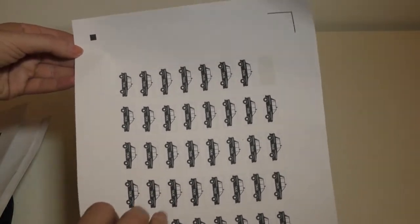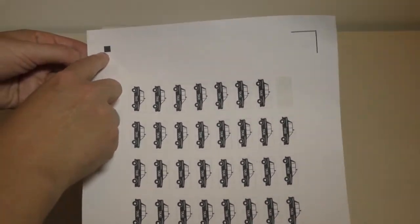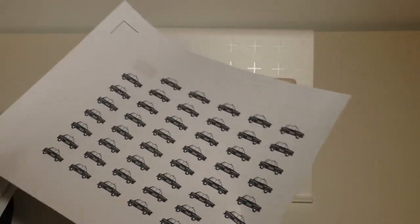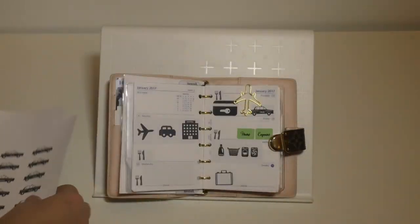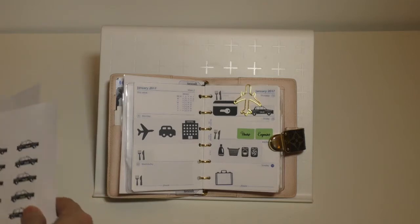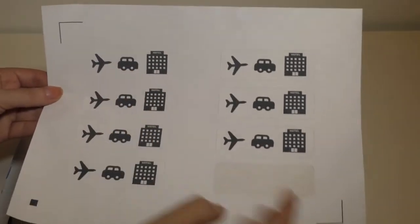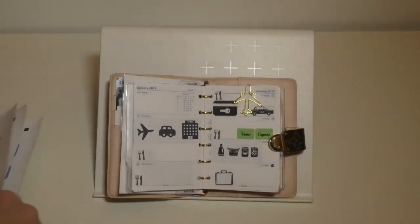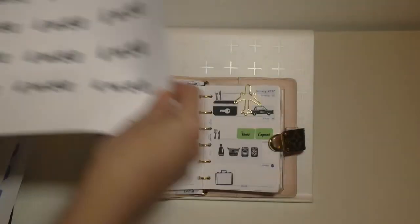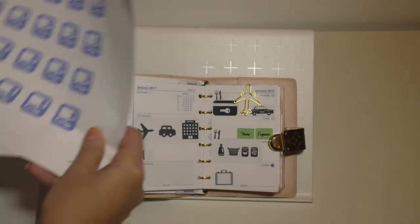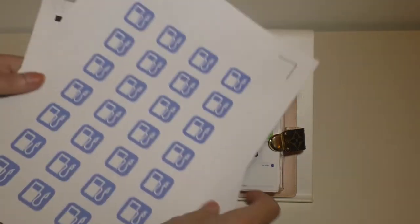When you put it through your Silhouette cutter, the system is supposed to read the marks and align to do the cutting. Again, it's kind of finicky, so sometimes it works beautifully. This is a good easy one where I just did a little bit of box around a couple of things. This worked out beautifully.